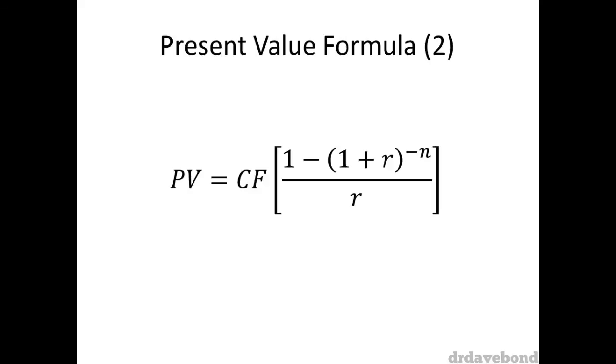Which is 1 minus 1 plus the discount rate, all to the power of n, all divided by the discount rate, and then multiplied by the periodic cash flow.